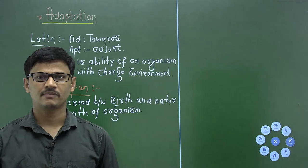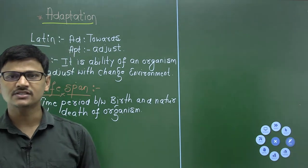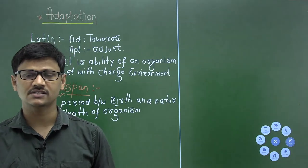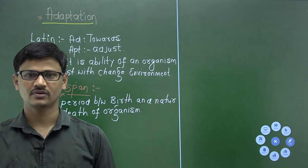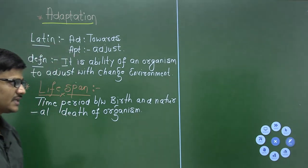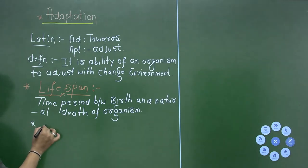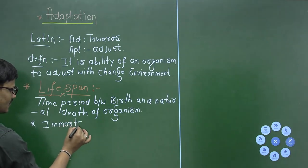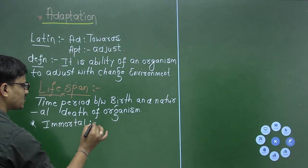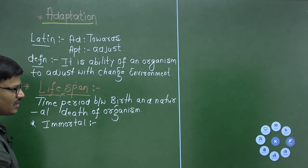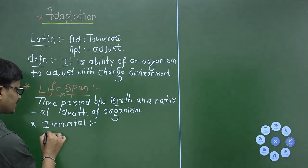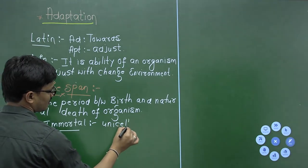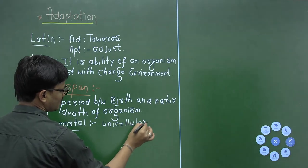Life span may vary, but all organisms have a life span. No organism on earth is considered immortal — they have to die. Except some organisms: organisms which do not have natural death are called immortal. The examples of immortal organisms are most unicellular organisms.